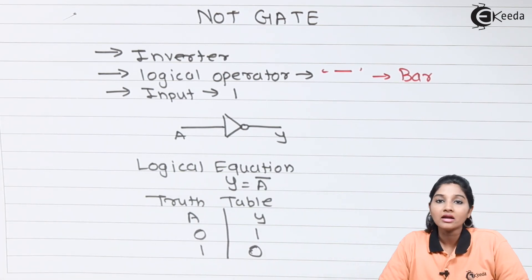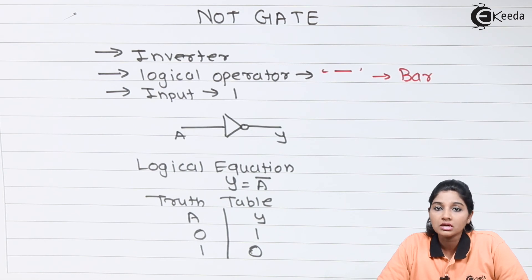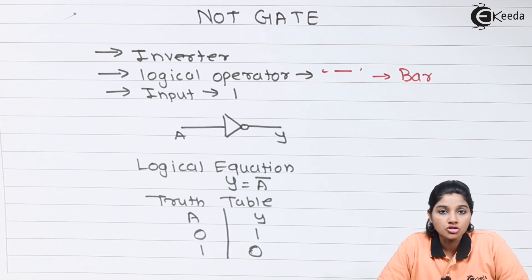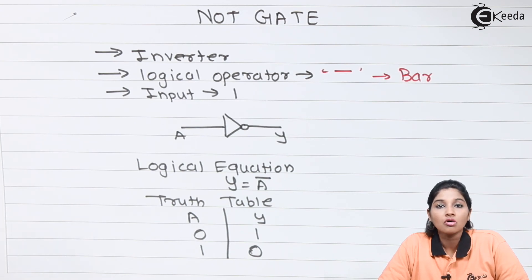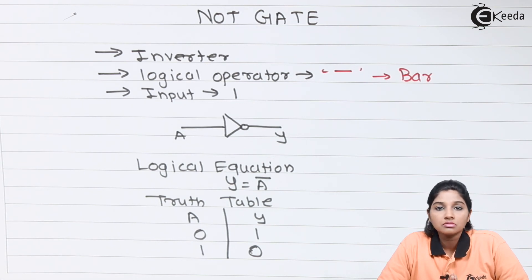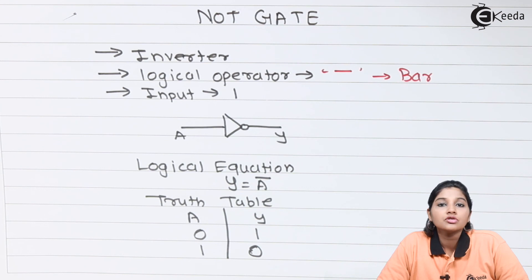So this is what AND, OR, and NOT gates are — the basic gates of digital circuits. AND is nothing but a logical product, OR is nothing but a logical sum, whereas NOT is nothing but the inversion of the input signal. I hope you understand the topic.